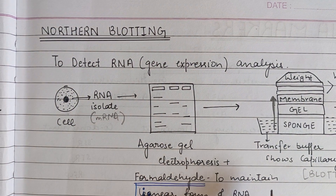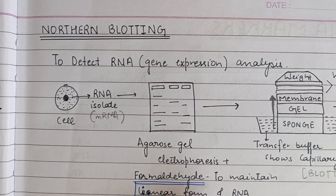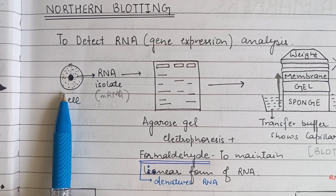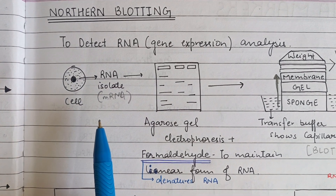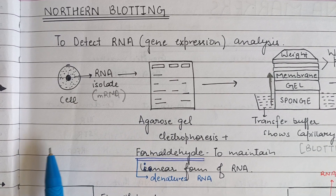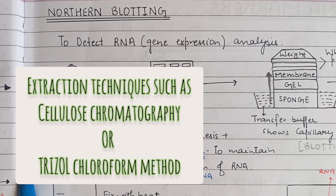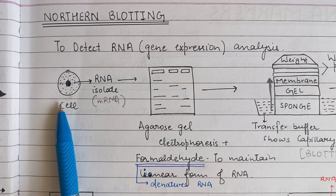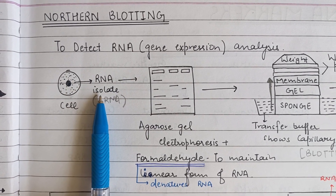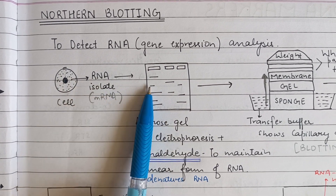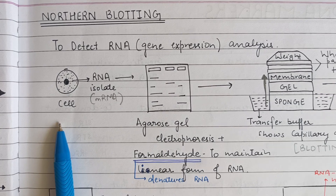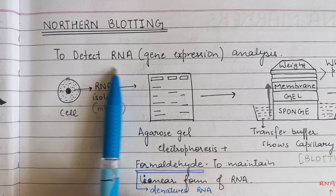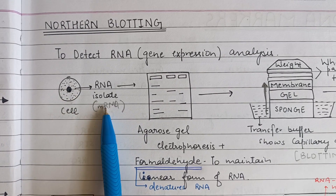There are certain steps. Just like Southern Blotting, Northern Blotting is very similar. We start with a sample containing cells, and from these cells we need to extract RNA. To isolate RNA we can perform various extraction techniques such as cellulose chromatography and the TRIzol-chloroform method. Using these methods we isolate RNA from the cells. The next step is to digest or cut the RNA into small fragments using RNA endonucleases, though we can also simply skip this step.